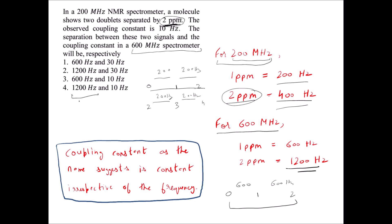The gap in Hz increases when we increase the instrument frequency, but in ppm it stays the same. For the coupling constant: in the 200 MHz instrument it is 10 Hz. The coupling constant is called a constant for a reason — no matter what the instrument frequency is, the coupling constant remains the same value in Hz, that is 10 Hz. The correct answer is option four.